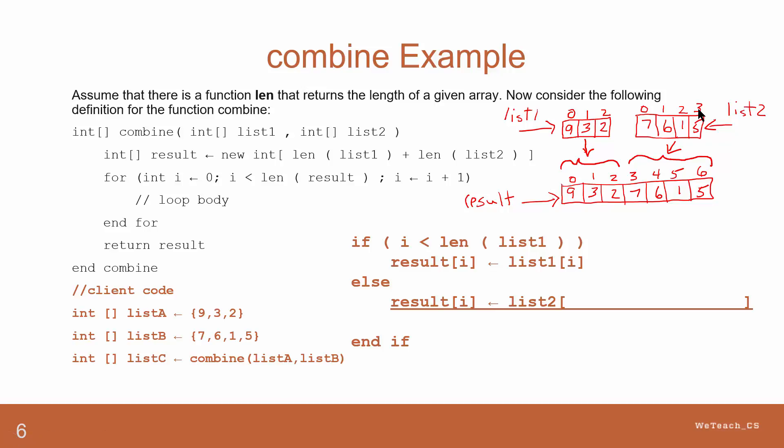Do you see a common relationship here? The positions are all off by 3, the length of the first array. If you do a subtraction process using the value of i minus the length of the first array, you will get the correct corresponding position of list2.